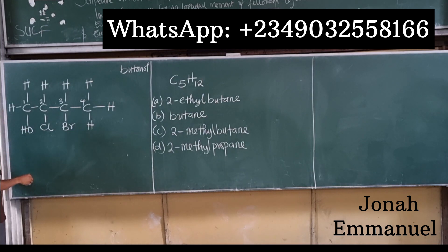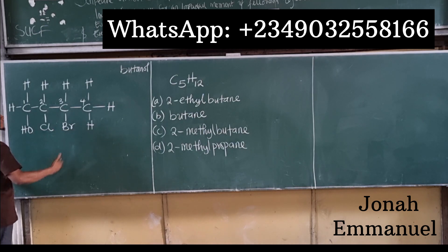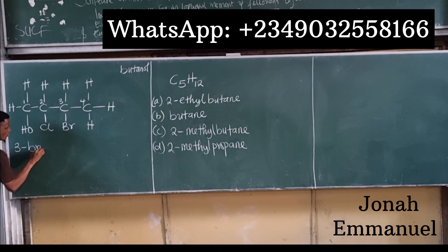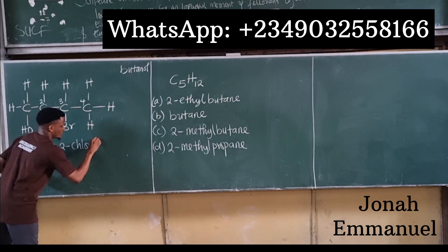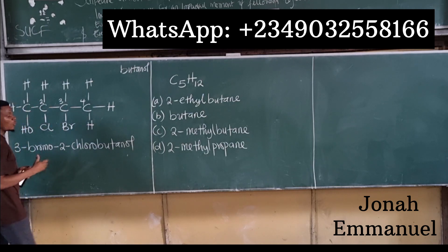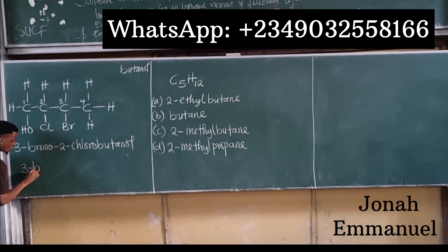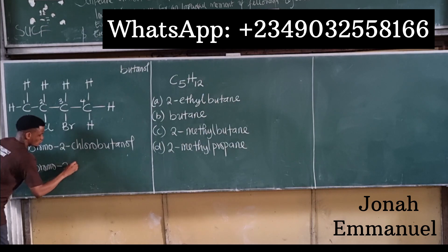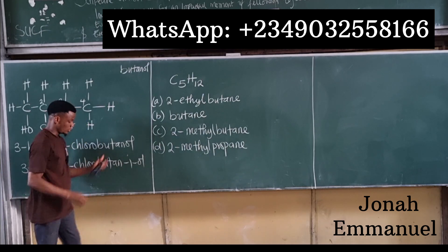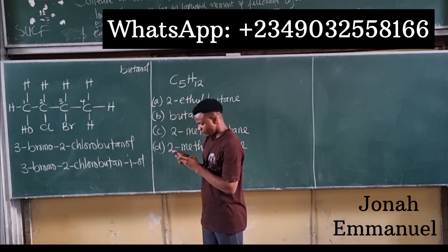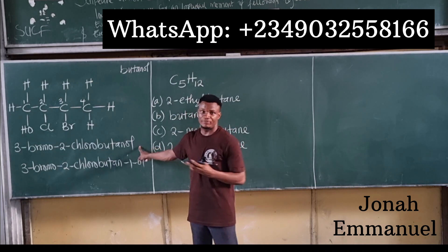Now I get the substituents in alphabetical order — bromine comes before chlorine (B before C). So I have 3-bromo, then 2-chloro, then butanol or butan-1-ol. The full name is 3-bromo-2-chlorobutan-1-ol. Checking the options, that is option B — so option B is the answer.